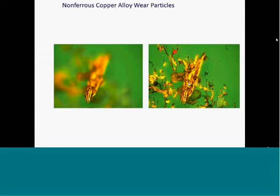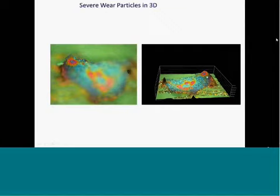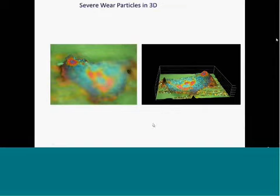Here's another particle called a severe wear particle in 3D. In 2D you can see the particle was heat treated, changing to a bluish color. In 3D, you see this is a large particle with various shapes — it's almost like a rolling pin rolled it out, making it a severe wear particle. It could have come from a bearing application because of the thin nature of how it's produced. This gives us a better prognosis of what's going on with the application — that's the beauty of this 3D application we'll be presenting in the future.